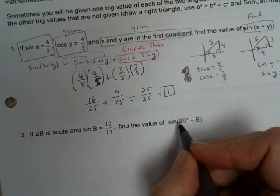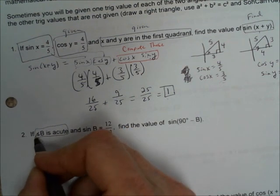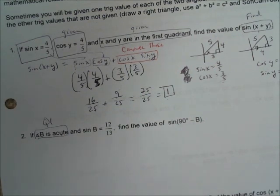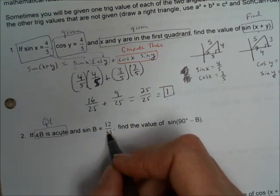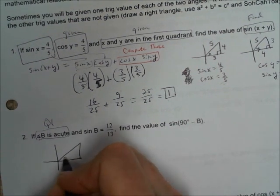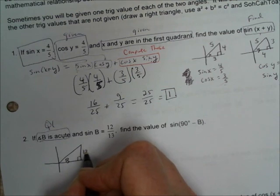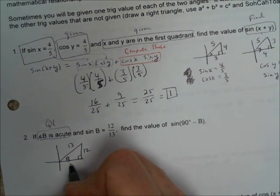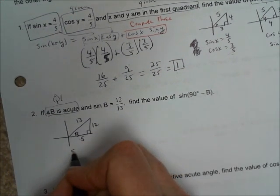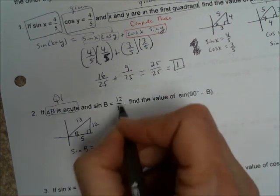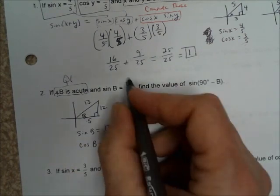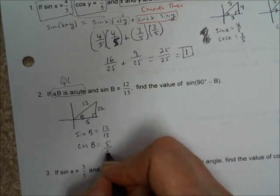The next problem: we are given that B is acute, which means it's in quadrant 1 because acute means less than 90 degrees. The sine of B is 12 over 13. Drawing a quadrant 1 triangle for B with sine as opposite over hypotenuse, the Pythagorean theorem gives us the missing side as five, making it a 5-12-13 triangle. They tell us sine of B is 12 thirteenths. We need cosine of B, which is adjacent over hypotenuse, equal to 5 over 13.